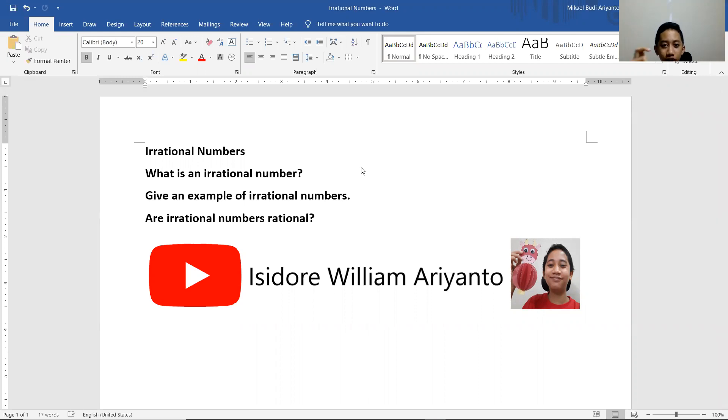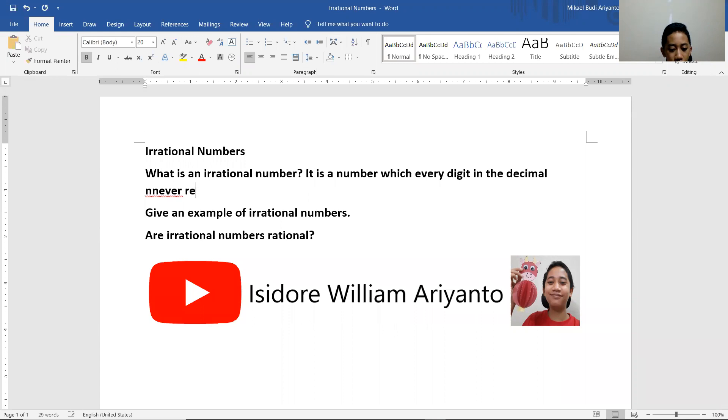What is an irrational number? It is a number which every digit in the decimal never repeats.